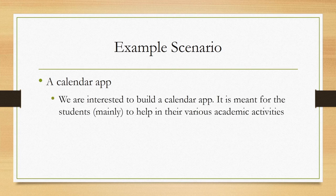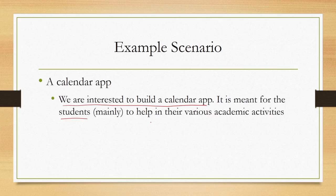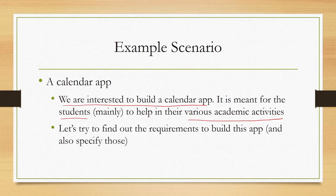Here we are specifying the system in a little more detail. Our objective is to build a calendar app primarily meant to be used by students, with the objective of helping them in their various academic activities. That is the broad purpose of the app. The user group is defined as students, and the purpose is to help them in their academic activities. In this case study we will try to find out how to gather usability requirements for this particular app, and also how to specify those requirements.